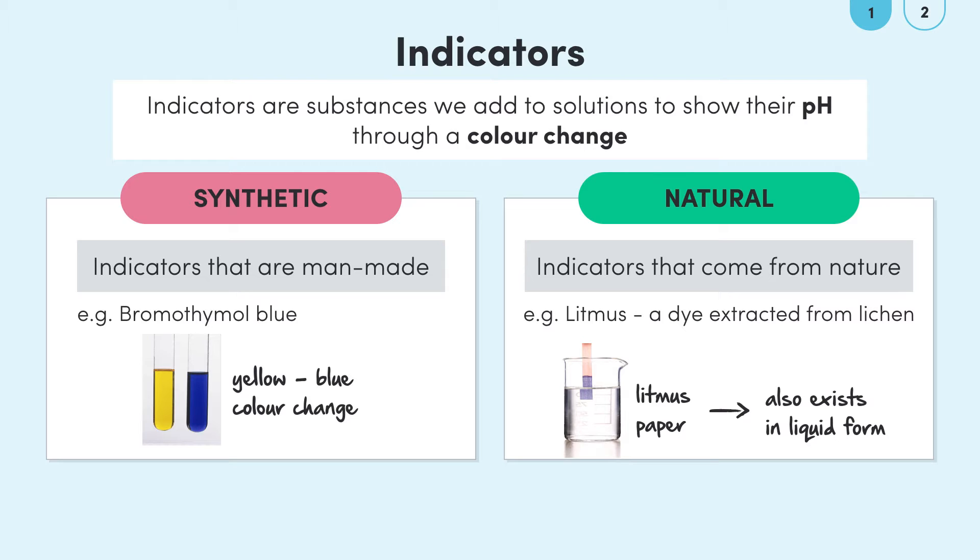Whilst litmus and other natural indicators are great we still make and design synthetic indicators because often synthetic indicators can give us clearer color changes when we're performing practicals. Synthetic indicators also tend to be cheaper and more easily sourced.